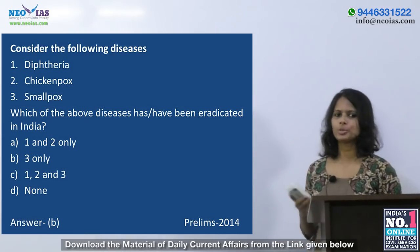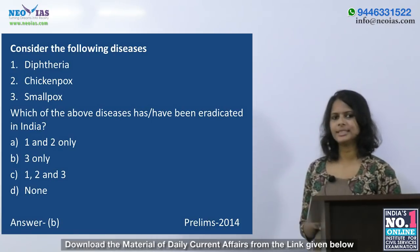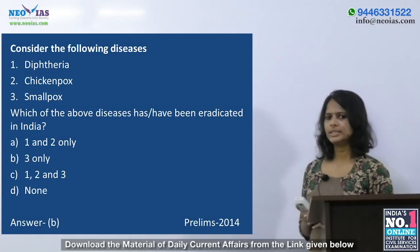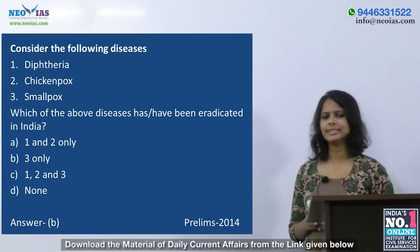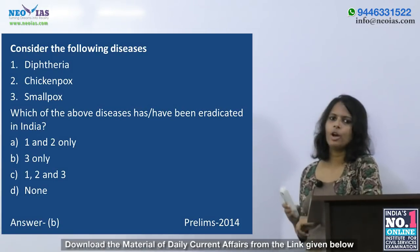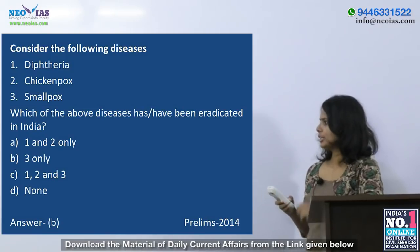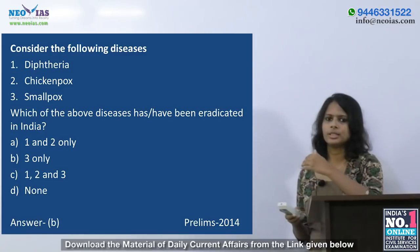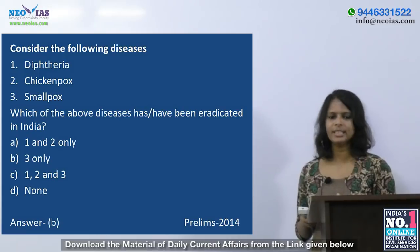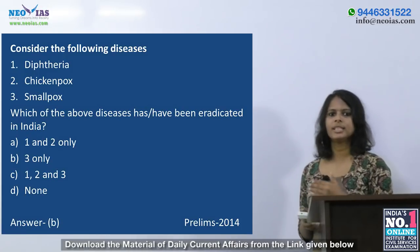Let's wind up today's session with a 2014 prelims question. Consider the following diseases: diphtheria, chickenpox, and smallpox. Which of the above diseases have been eradicated in India? Option A: 1 and 2 only. Option B: 3 only. Option C: 1, 2 and 3. Option D: none. As we just discussed, smallpox was declared eradicated by the WHO in 1980, so the answer is B — 3 only, that is smallpox only.